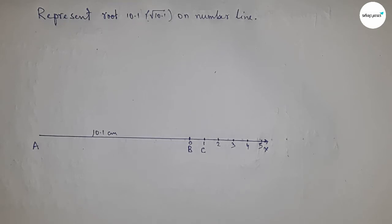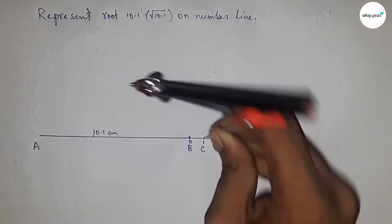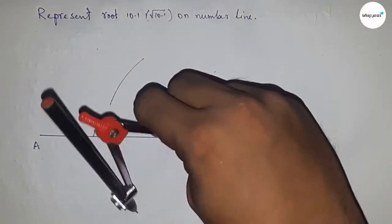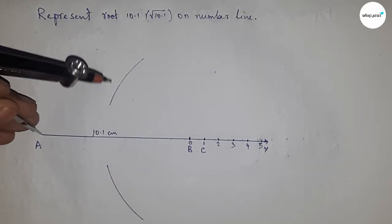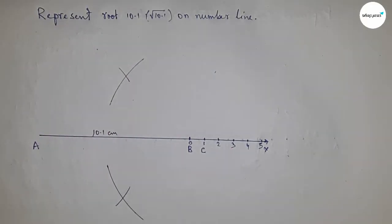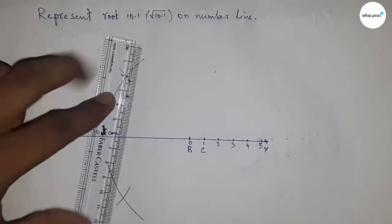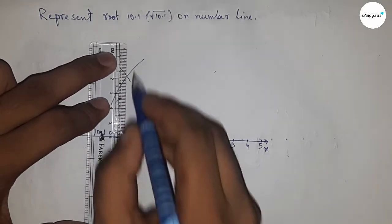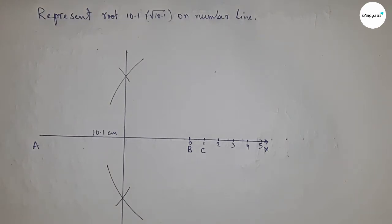Now having to bisect the line AC, so taking greater than half of AC and drawing arcs by this way with same length, and putting the compass here and cut the arcs. Next, joining this which meet at point O.